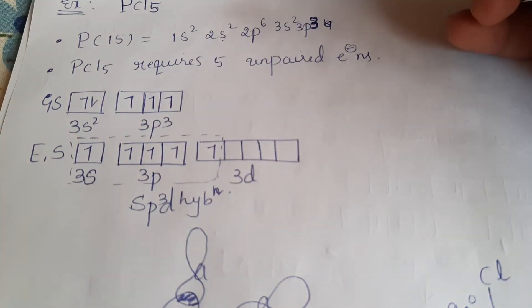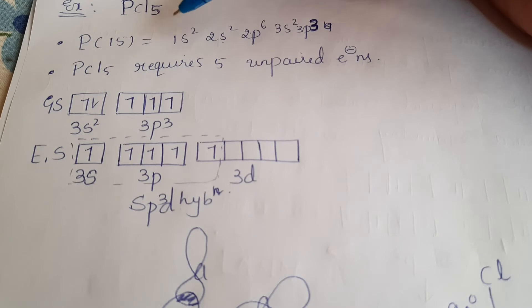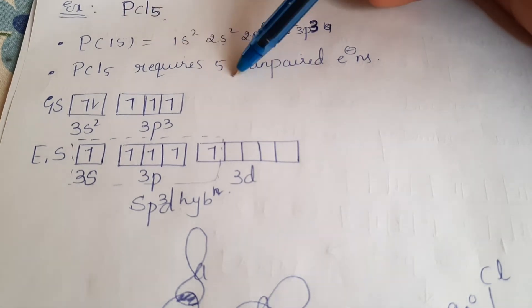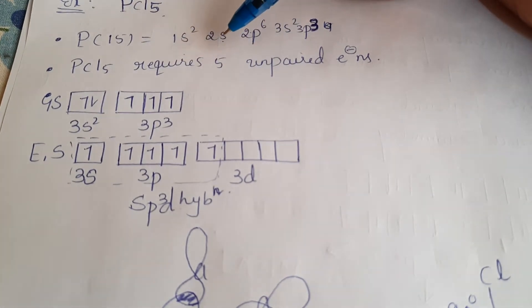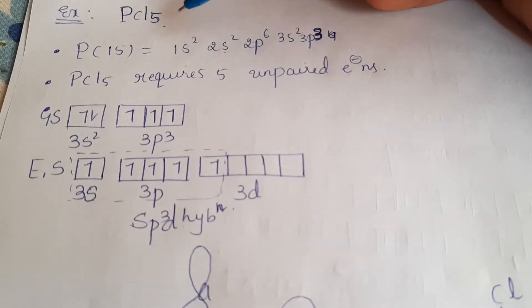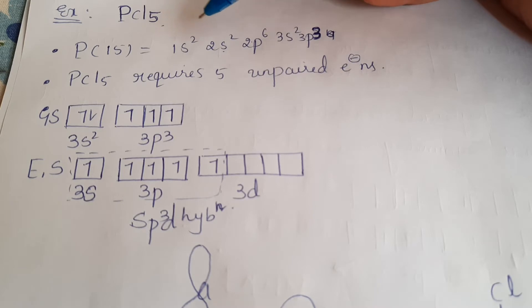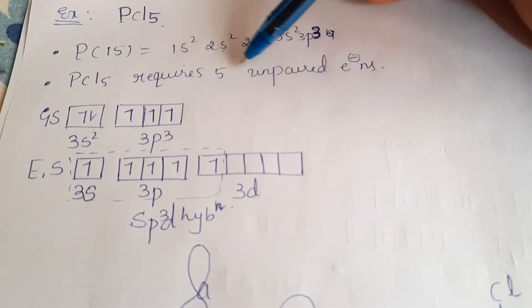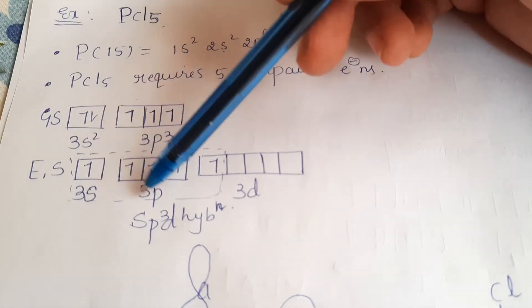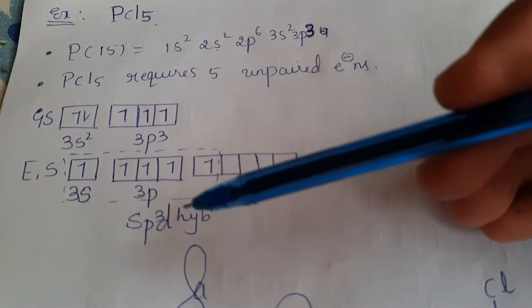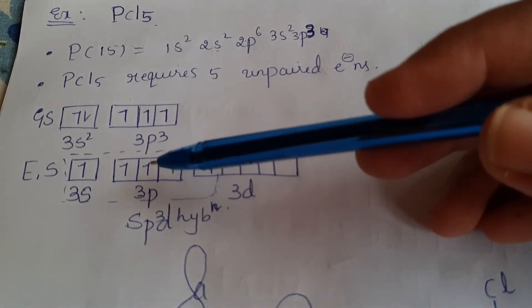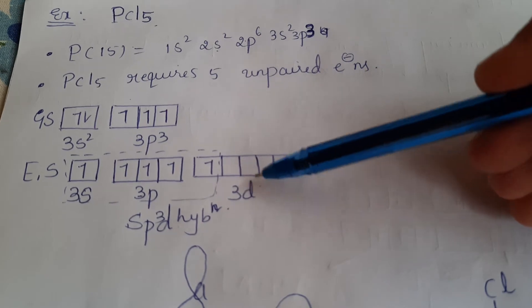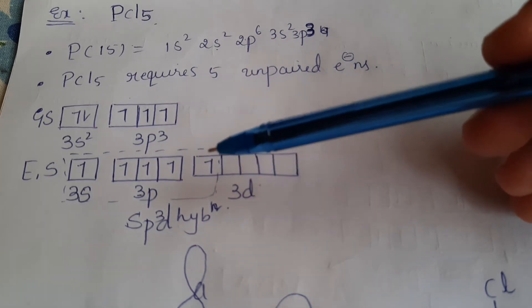Coming to the next example: phosphorus pentachloride, PCl₅. Phosphorus with atomic number 15 has 5 unpaired electrons in the ground state. In the excited state, one of the 3S electrons shifts to the 3D orbital. This is different from previous examples where electrons shifted only to P orbitals. Here, once we have 3S2 and 3P orbitals, the 3D orbital also becomes available.